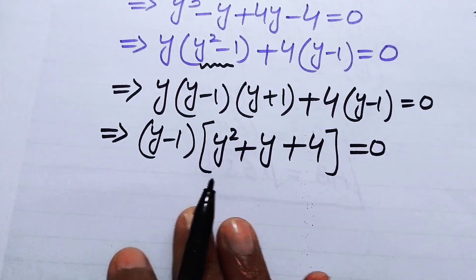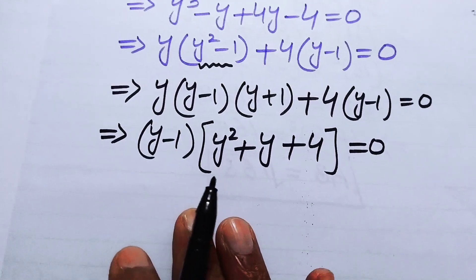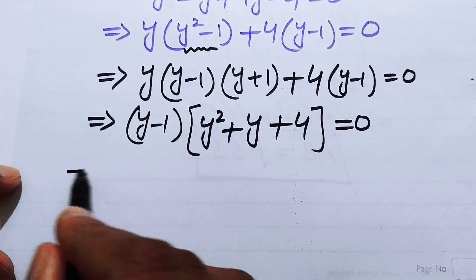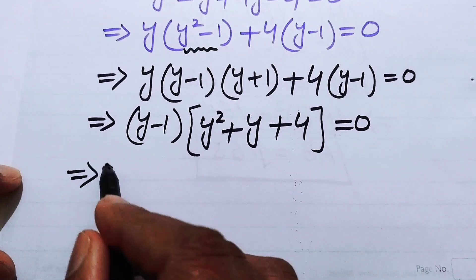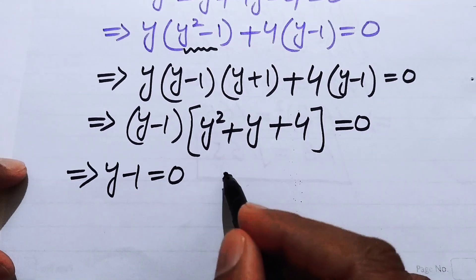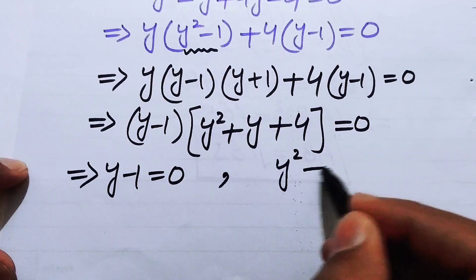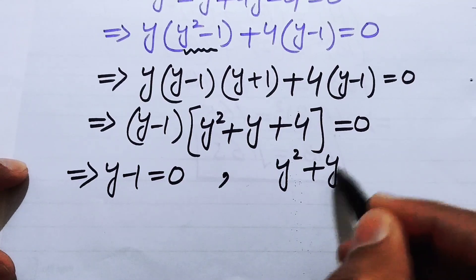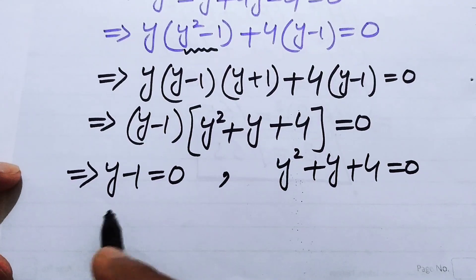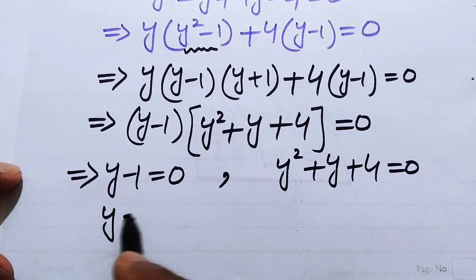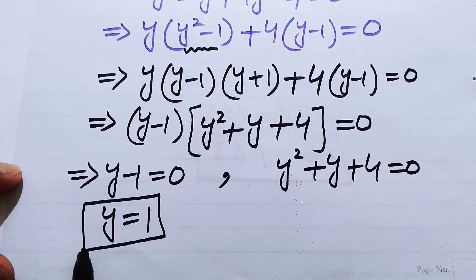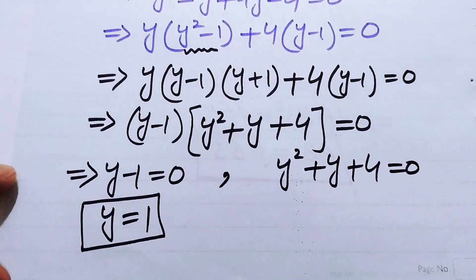We now have two cases. The first case is y minus 1 equals zero, which gives the first real solution y equals 1. The second case is y squared plus y plus 4 equals zero.